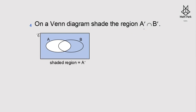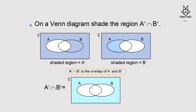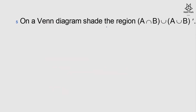On a Venn diagram, shade the region A'∩B'. This means elements that are both in A complement and in B complement. The shaded region for A' is everything not in A, and for B' everything not in B. A'∩B' is the overlap of those two regions — the area outside both A and B.